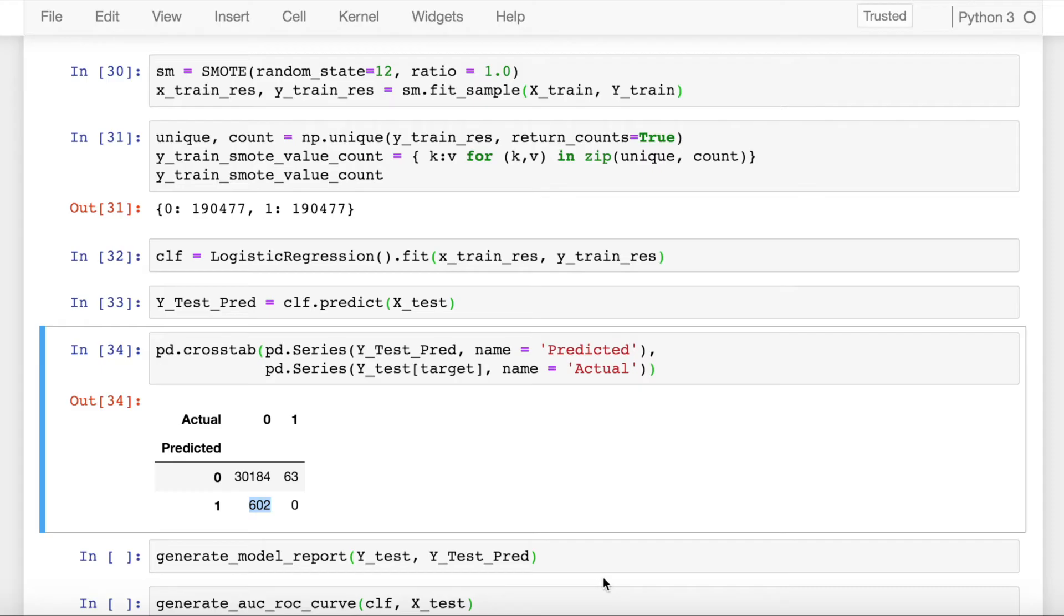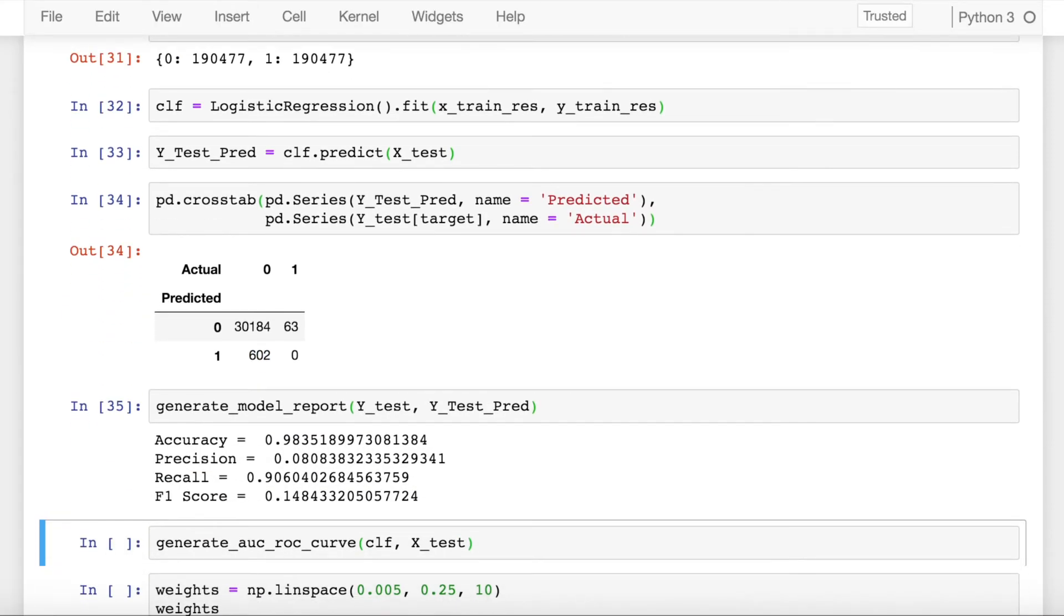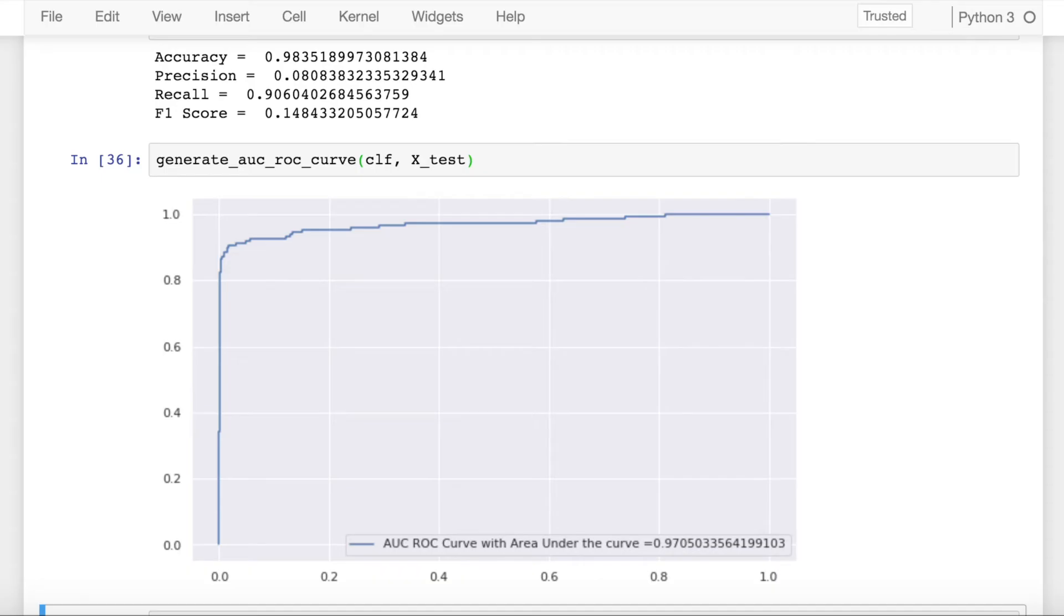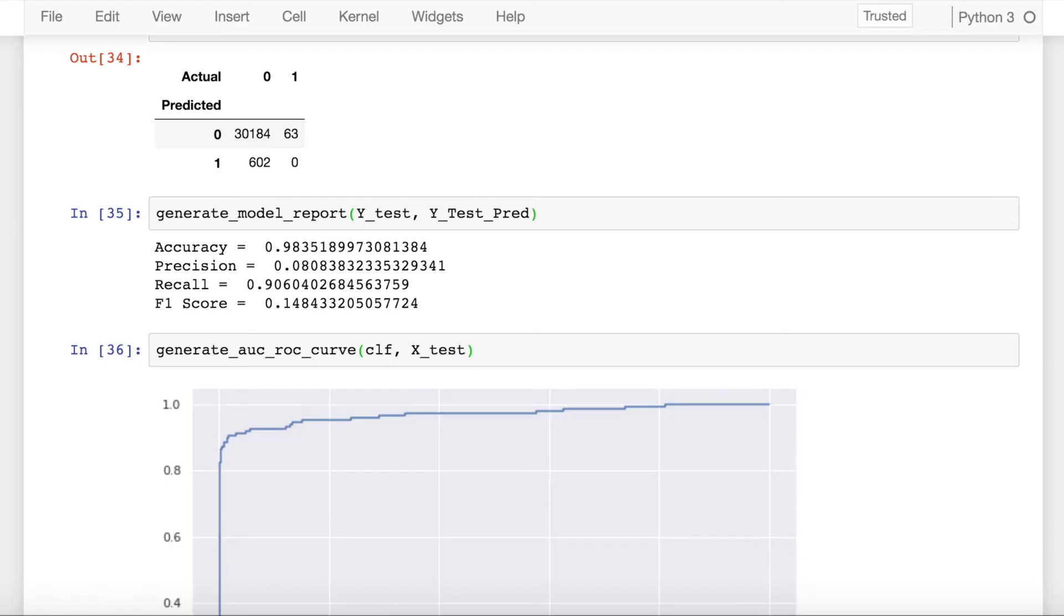Now if I generate the model report as well, I see that it's a fairly accurate model but with a very low F1 score. And the AUC values are also very high. Now that we've understood that how SMOTE works and how it's implemented in sklearn, we had this issue of false positives into the system or to create a balance between false positives and false negatives.